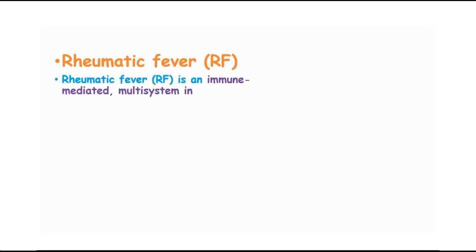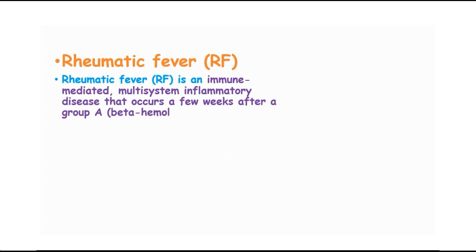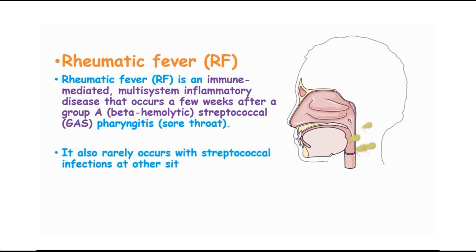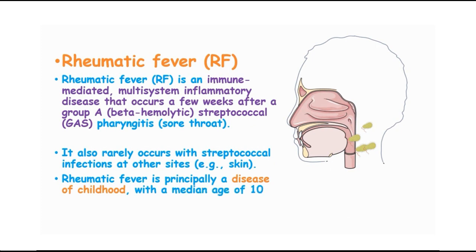Rheumatic fever is an immune-mediated multi-system inflammatory disease which occurs a few weeks after group A beta-hemolytic streptococcal pharyngitis. This rheumatic fever rarely also occurs with streptococcal infections at other sites such as the skin. It is principally a disease of childhood with a median age of 10 years, although it can also occur in adults.